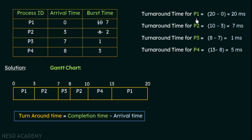The turnaround time for P1: looking at the Gantt chart, P1's completion time is 20 ms (its last occurrence), and its arrival time from the table is 0 ms. So the turnaround time is 20 minus 0 = 20 ms. For P2: the last occurrence in the Gantt chart shows a completion time of 10 ms, and its arrival time is 3 ms. So the turnaround time is 10 minus 3 = 7 ms.